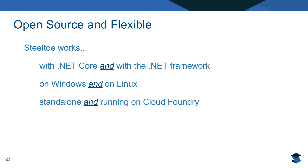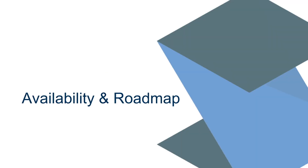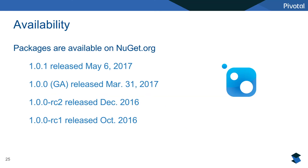SteelToe is open source and flexible. It works with .NET Core — the cloud-native version of .NET — and also with .NET Framework if you've got legacy applications you're trying to strangle the monolith from. As a result it runs on both Windows and Linux, and is perfectly functional standalone as well as on Cloud Foundry. We released our first RC1 in October of last year and then our GA version on March 31st of this year.